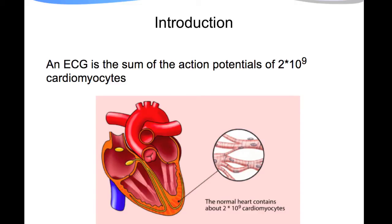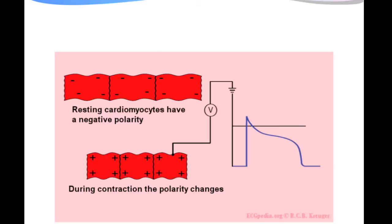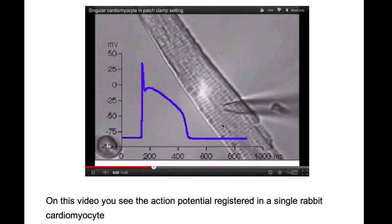An electrocardiography recording is a registration of the electrical activity of the heart and is a sum of the action potentials of 2 billion cardiomyocytes. Resting cardiomyocytes have a negative polarity and during contraction the polarity changes and becomes positive. If you look at a single cardiomyocyte, you can record the electrical activity within that single cardiomyocyte and you see the action potential.